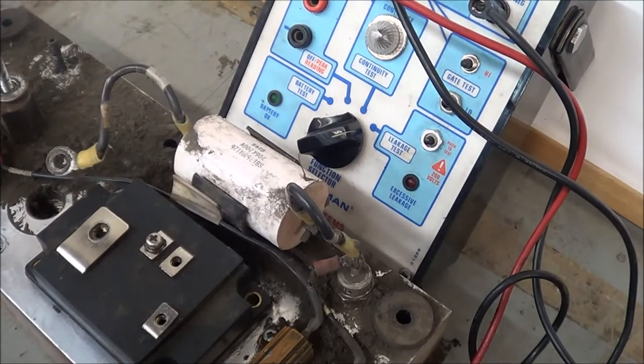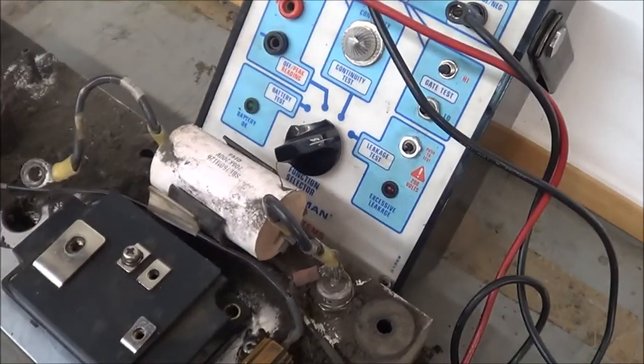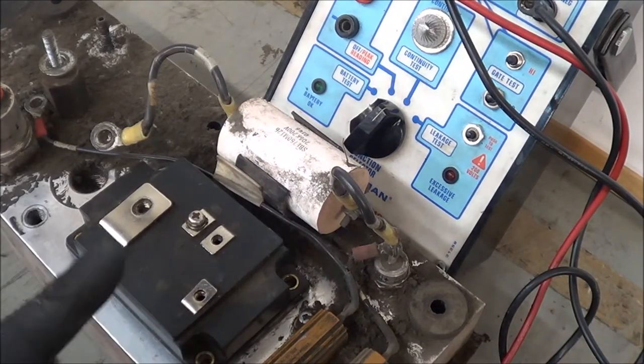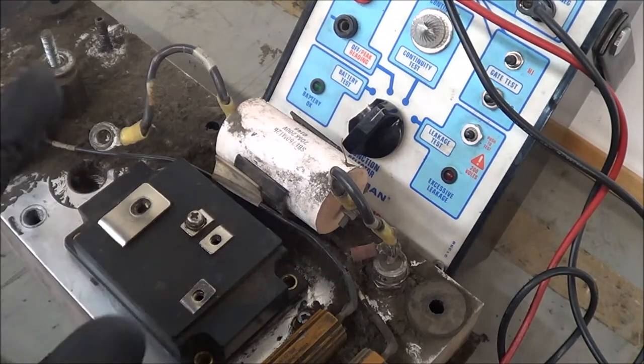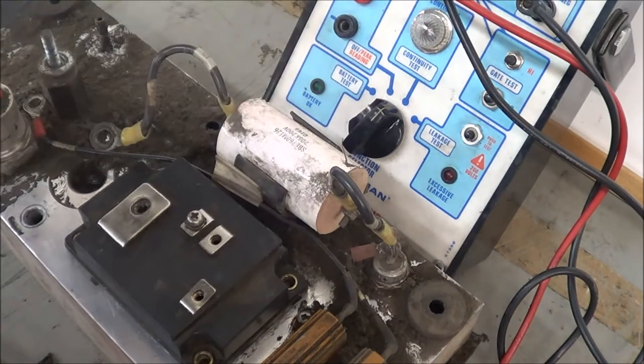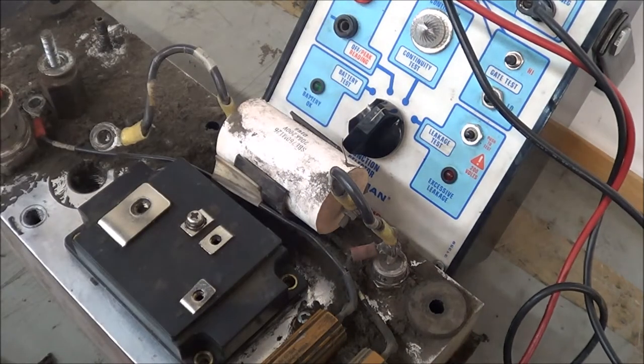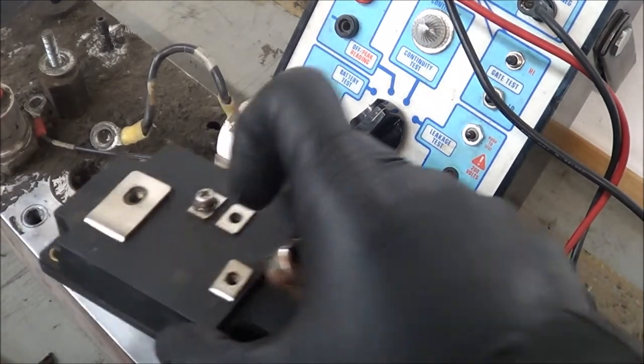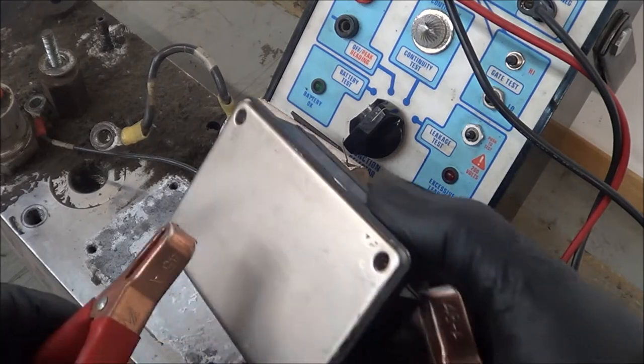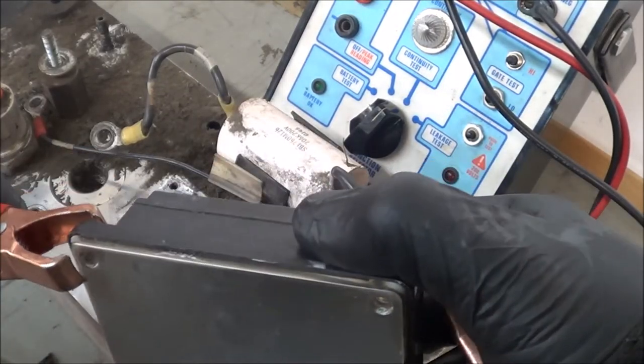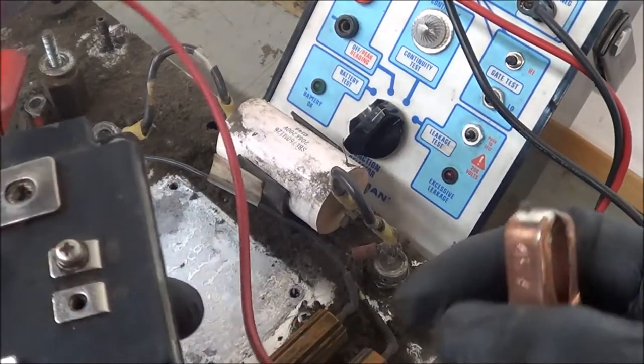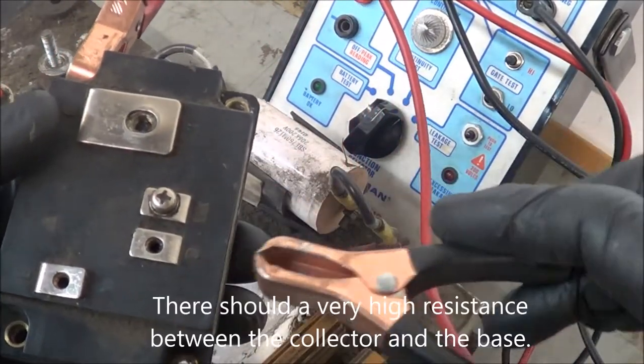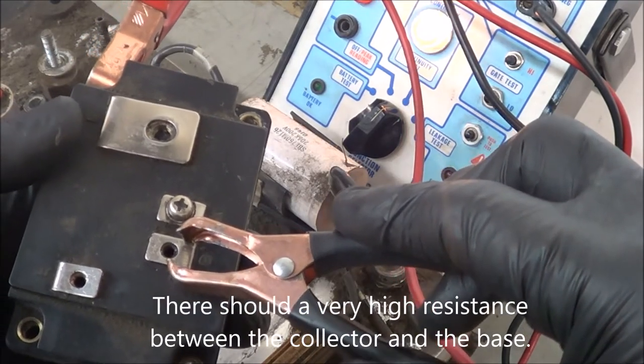You can also do the same test on the Q1, but we already know this is blown. What we saw with the oscilloscope earlier is there is voltage passing through from the collector to the base of this transistor. So the collector is going to be the bottom part of this, this would be the collector side for this transistor, and then the base is going to be this guy right here. So we have it on continuity and without any gate signal.